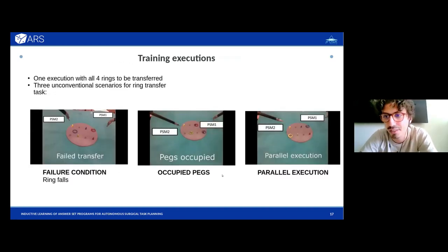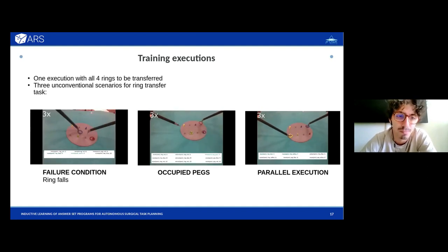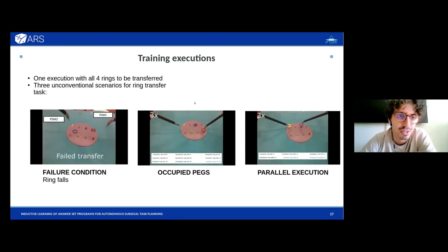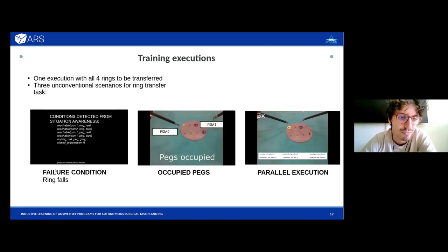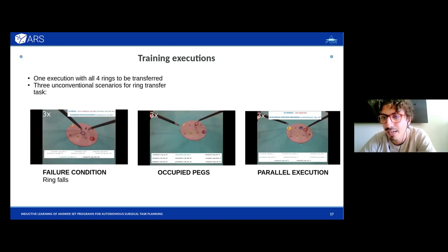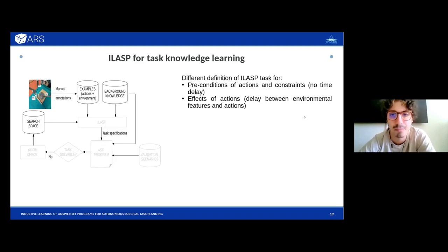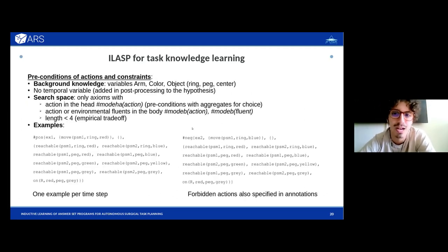We learn the specifications for this task from scratch using only four example executions in different environmental conditions, to replicate the typical scenario of surgical datasets. We have one execution with all four rings to be transferred, three unconventional executions — one with a failure condition of a ring falling, one with occupied pegs to be freed at the beginning, and one parallel execution. We provide a framework for learning and then refining task specifications in validation. The learning process is split depending on whether we learn preconditions and constraints or effects of actions, due to the temporal delay. For preconditions and constraints, the temporal variable need not be included in the background knowledge but is added afterwards in post-processing.